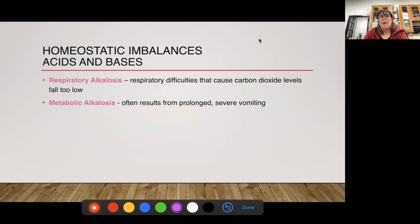And then we have alkalosis, which is where it becomes too basic. And this is respiratory difficulties that cause carbon dioxide levels to fall too low. So what happens is again if you're hyperventilating, you're usually taking in a lot more oxygen and you're not getting rid of the CO2. Our body regulates breathing not by our level of oxygen but by the level of CO2. We have CO2 receptors, and so when that becomes unbalanced, it messes with the pH in your blood.